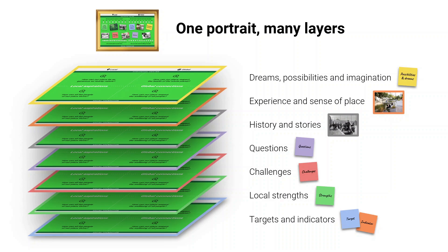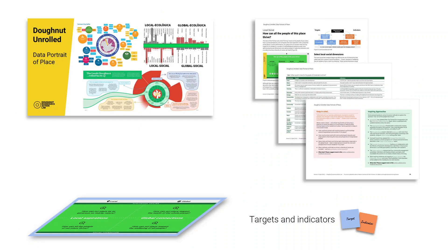Now that we're all on the same page, I'm going to zoom in on the data layer focused on selecting locally relevant targets and indicators to measure social and ecological performance. The core methodology for selecting targets and indicators across these four lenses is set out in the Donut Unrolled Data Portrait of Place Handbook.